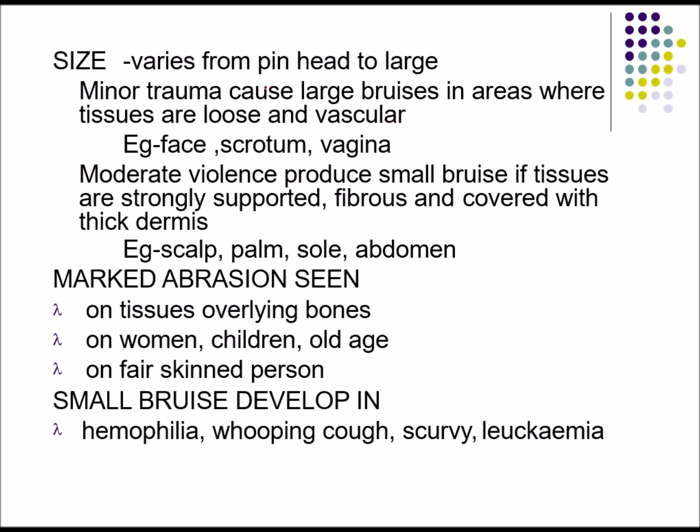The size varies from pinhead to large. A minor trauma causes large bruises in areas where tissues are loose and vascular, such as the face, scrotum, and vagina. Moderate violence produces small bruises where tissues are strongly supported, fibrous, and covered with thick dermis, like the scalp, palm, sole, and abdomen.